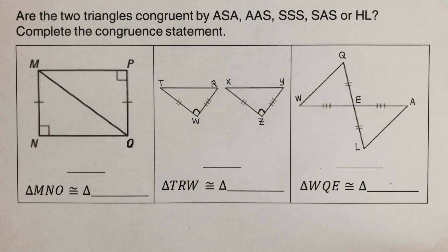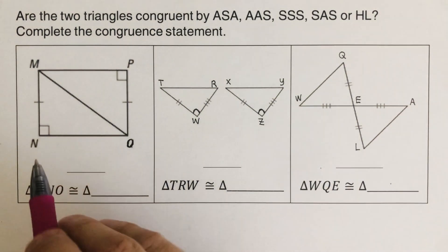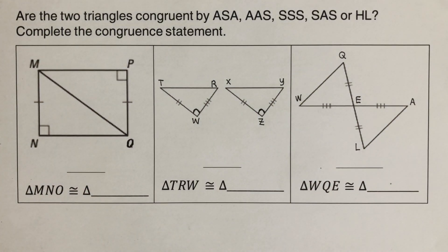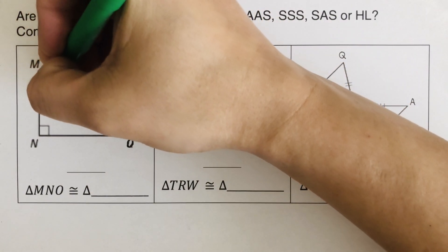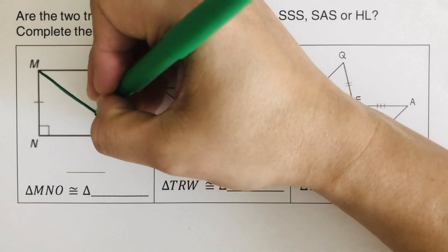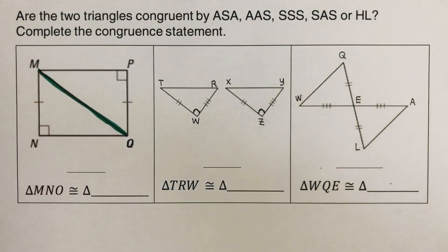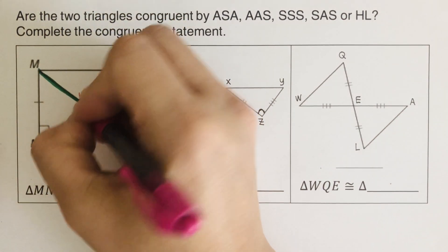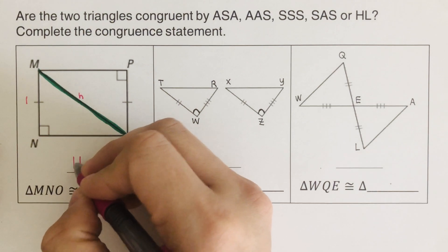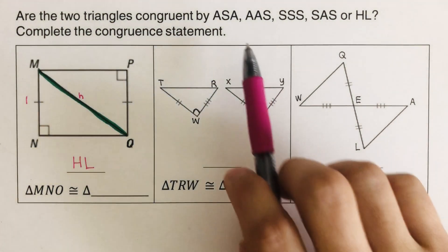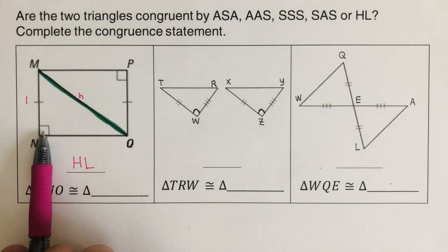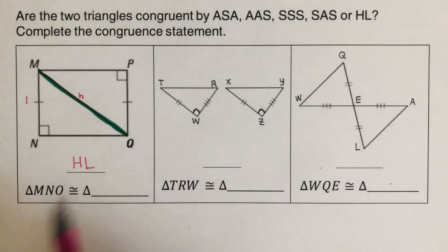Looking at this first triangle, it is a right triangle, so there's a possibility we can use HL. But a right triangle doesn't have to be HL — it can be SSS or SAS. In this case, this side is shared by both triangles. This is the hypotenuse and this is the leg, so this is HL. We cannot use another theorem here because we'd have angle-side-side, and there is no ASS congruence theorem — it's not going to work. So this is HL.